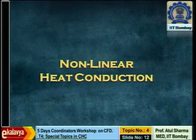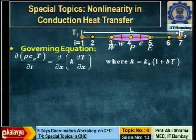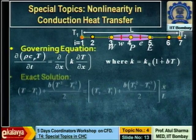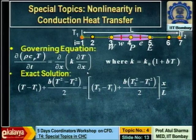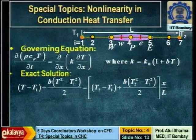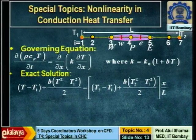The next topic is non-linear heat conduction. In heat conduction there are very few cases of non-linearity; one is when conductivity becomes a function of temperature. Suppose conductivity varies linearly: k = k_0(1 + bT), where k_0 and b are constants. The good thing is that for the steady-state case we can obtain an analytical solution by integrating the governing equation twice using this k expression. Developing a numerical code and testing it against the exact solution can be used for code validation.